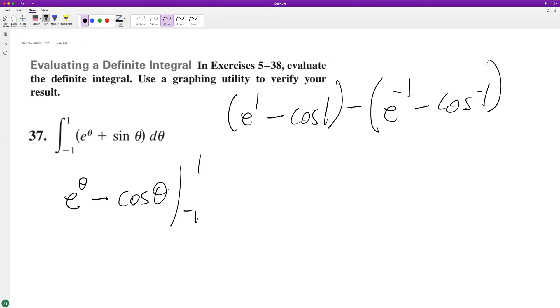So this is e, cosine of 1 is 0, and then e raised to the negative 1 is 1 over e, and then the cosine of negative 1 is 0.